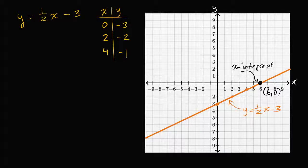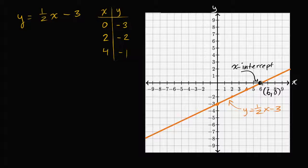Why is it called the x-intercept? Because that's where the graph is intersecting the x-axis. The x-intercept looks like it is at the point six comma zero. The x-intercept happens when y is equal to zero. Remember, you're on the x-axis when you haven't moved up or down from that axis, which means y is equal to zero. So your x-intercept happens at x equals six, y equals zero — it's this coordinate.